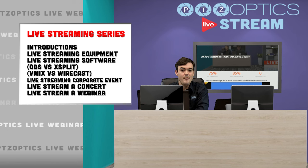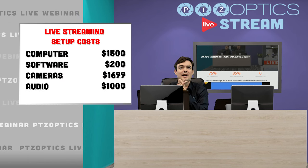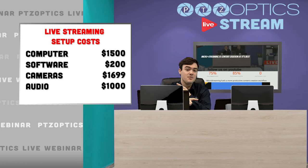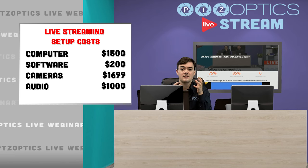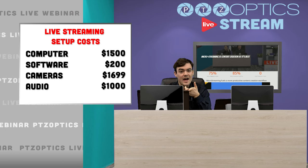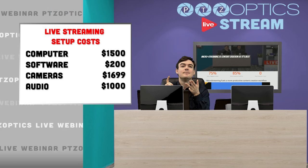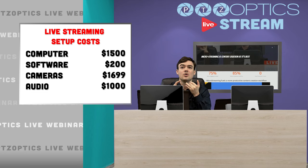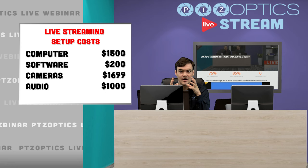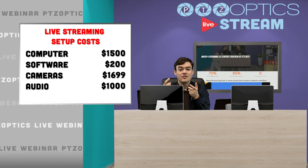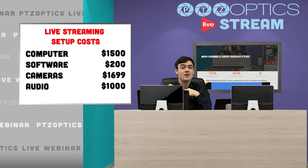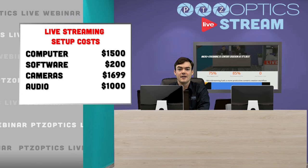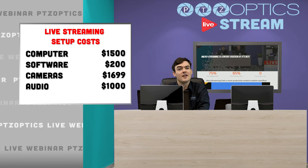So what do you need equipment-wise to get started, bare bones? I've thrown some rough prices in here — budgetary estimates, these prices could fluctuate. But you need a computer or some type of hardware — there's a lot of different pieces out there, like a TriCaster or a live streaming box. You need some type of software, whether it's vMix, Wirecast, XSplit, or open source broadcasting software. You need at least one camera, if not two or more, and then some type of audio device. Those are the basic four things you have to have.